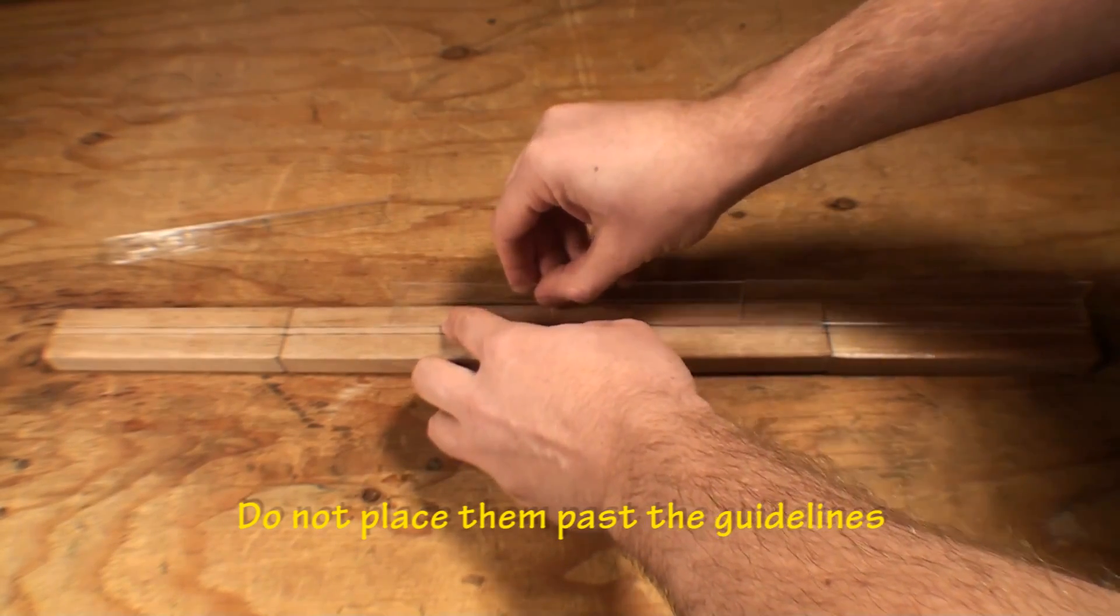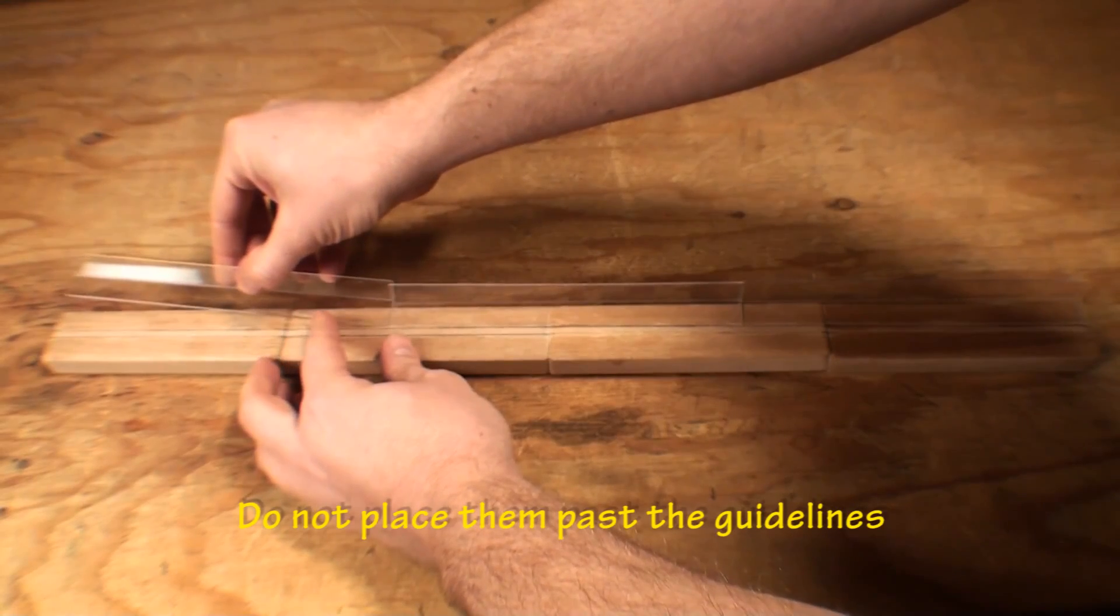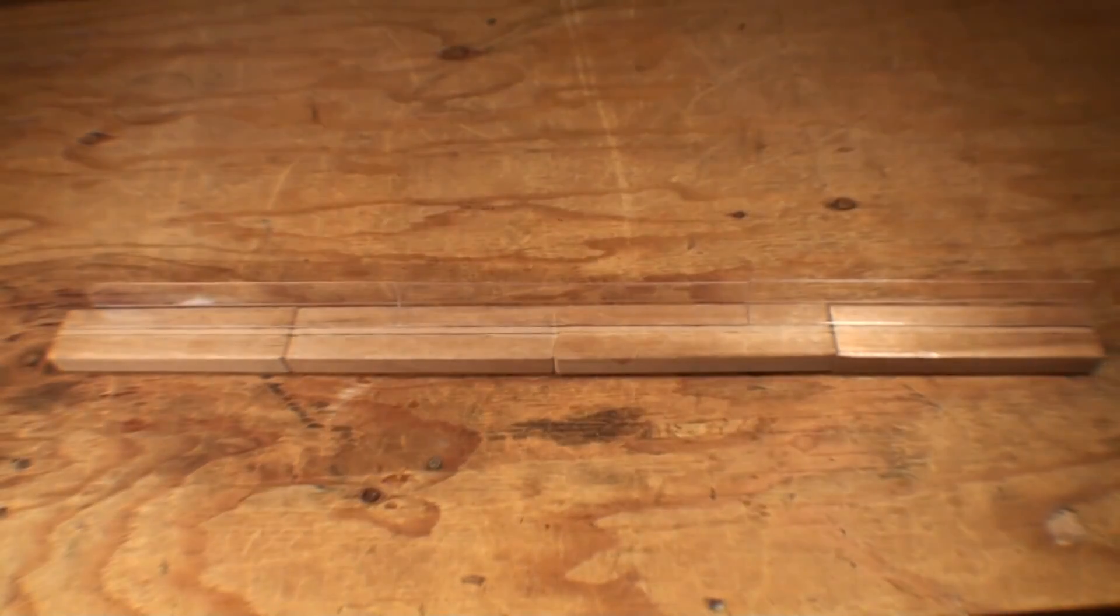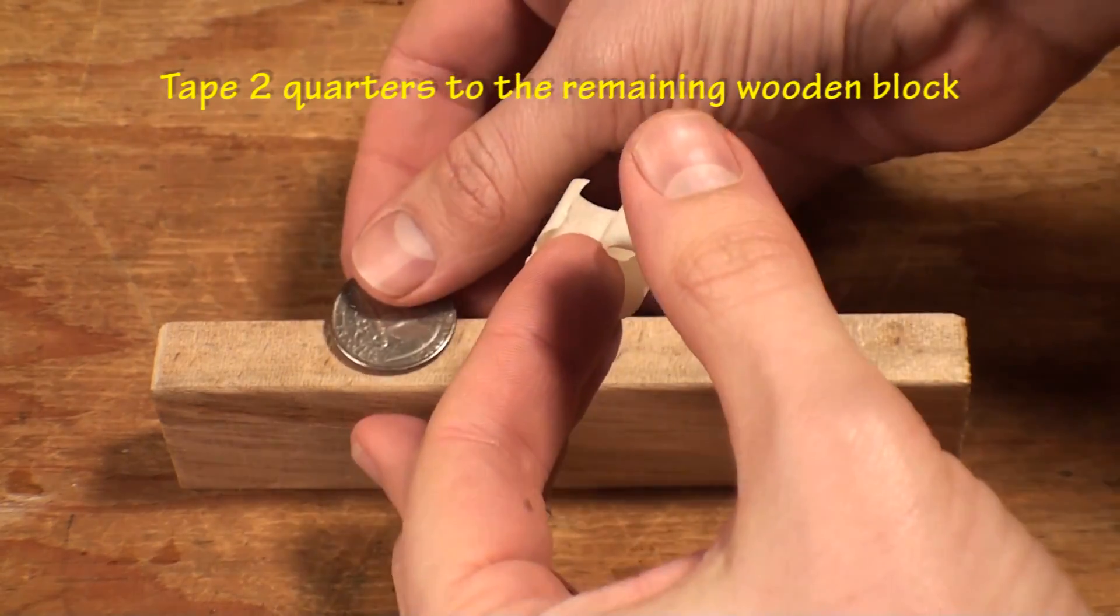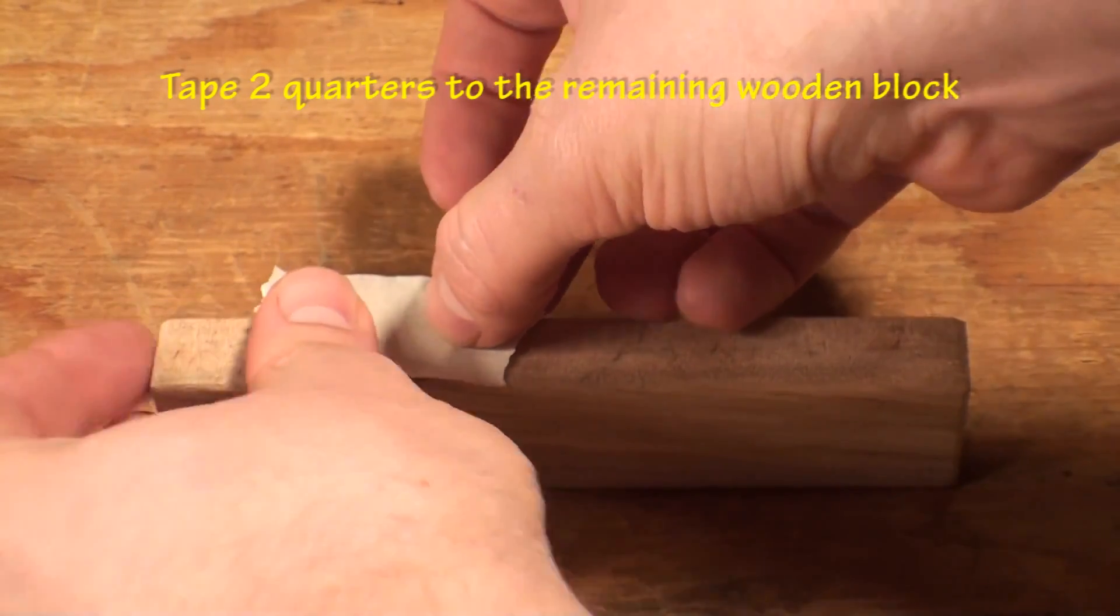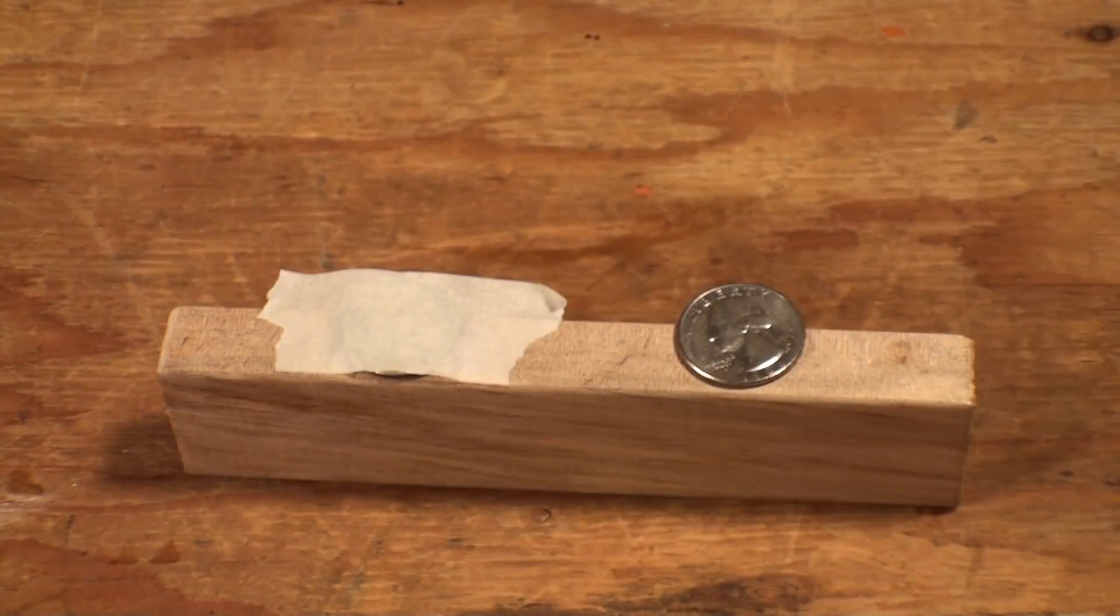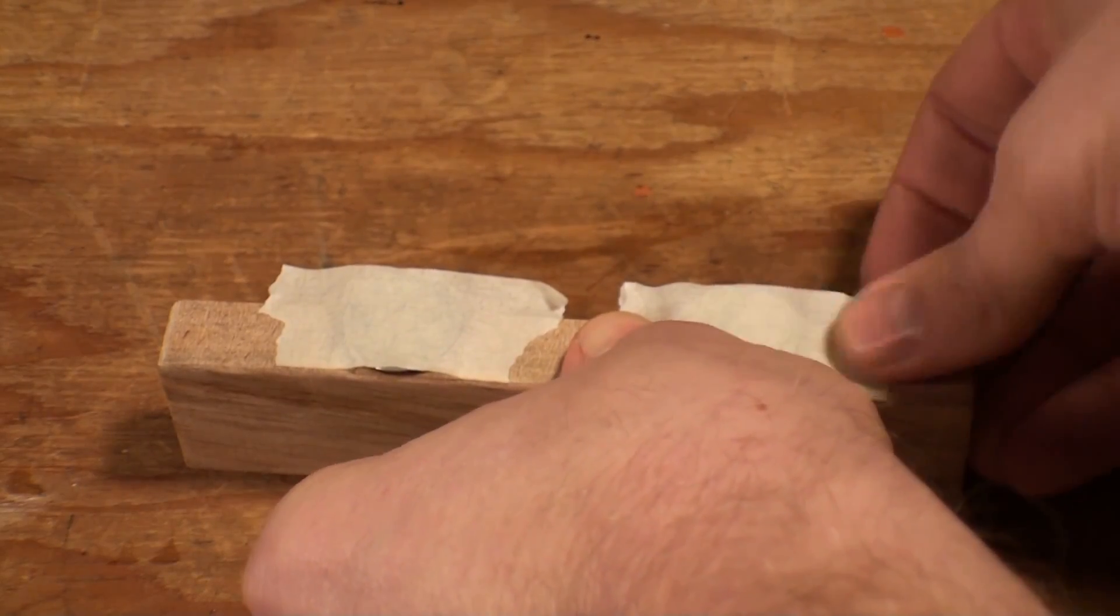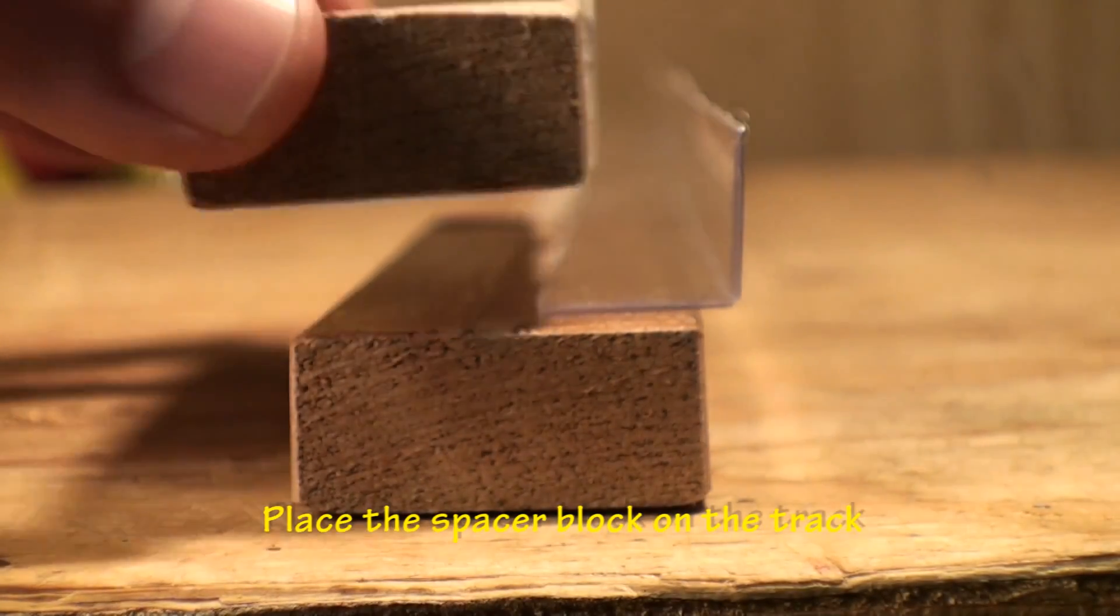Do not place them past the guidelines. Take the remaining wooden block and tape the two quarters to one of the sides of the block. This will be used to make sure there is enough space between the plastic railings. Before placing the last three plastic angles, place the block with quarters on the track.